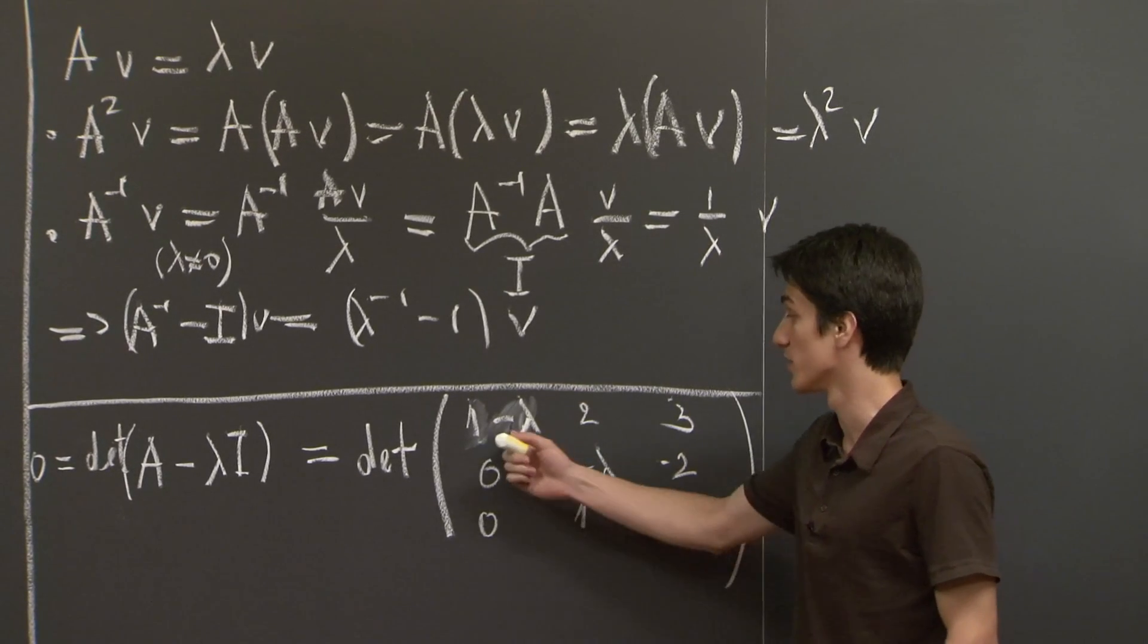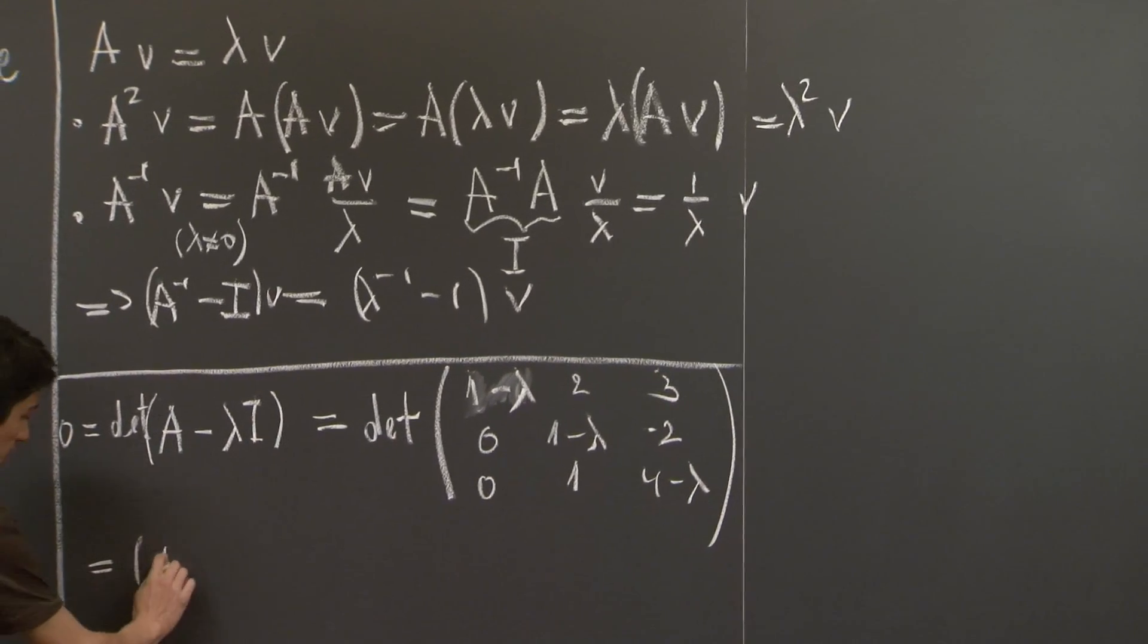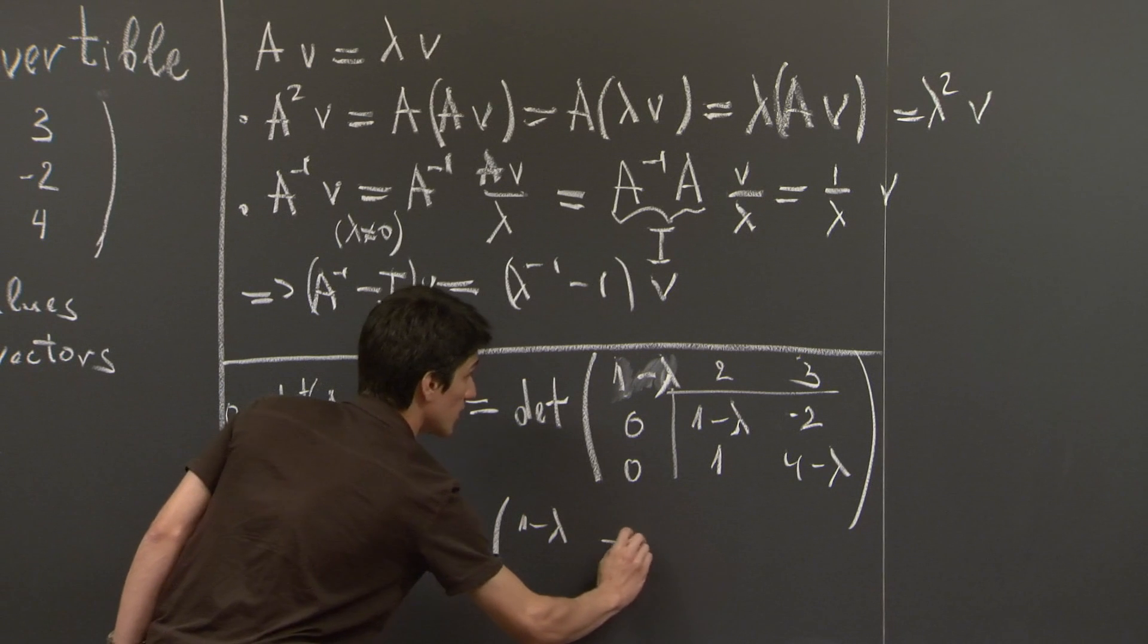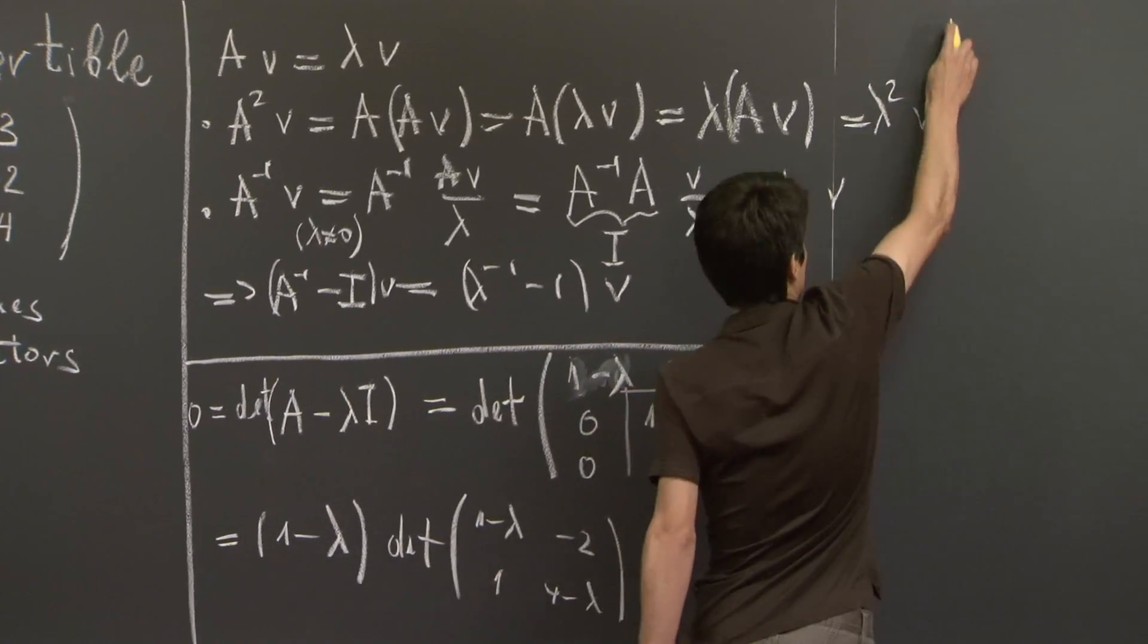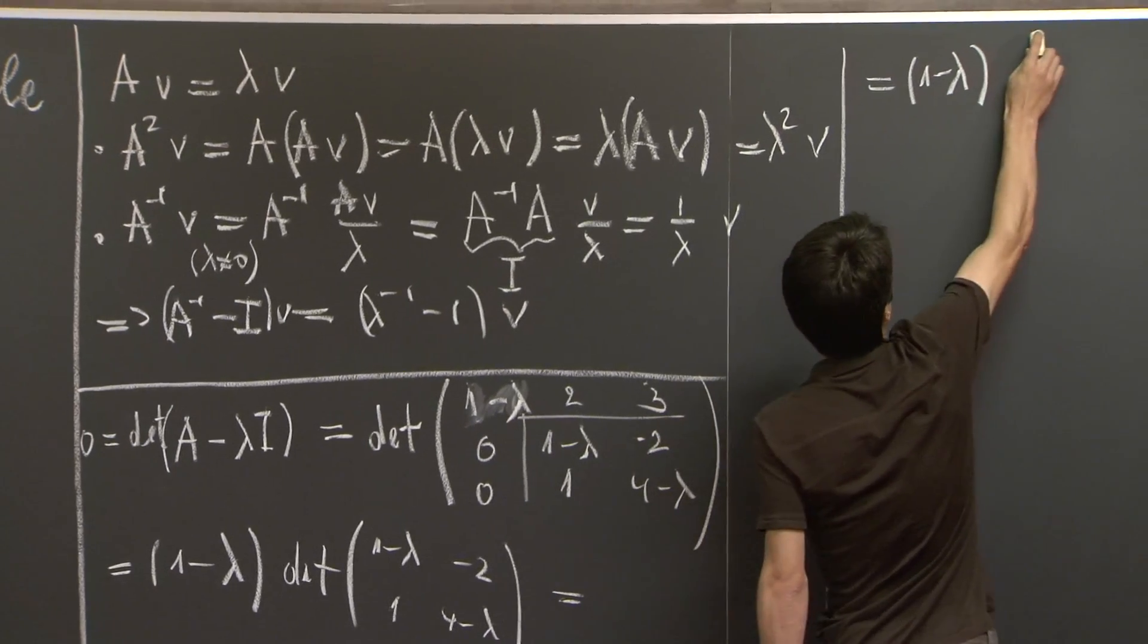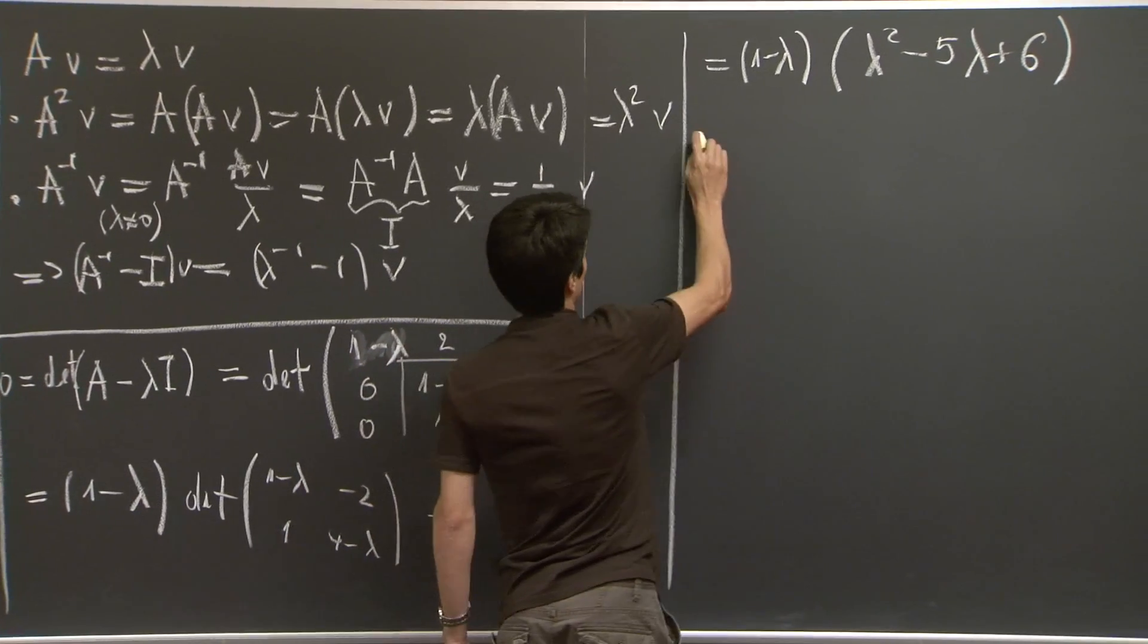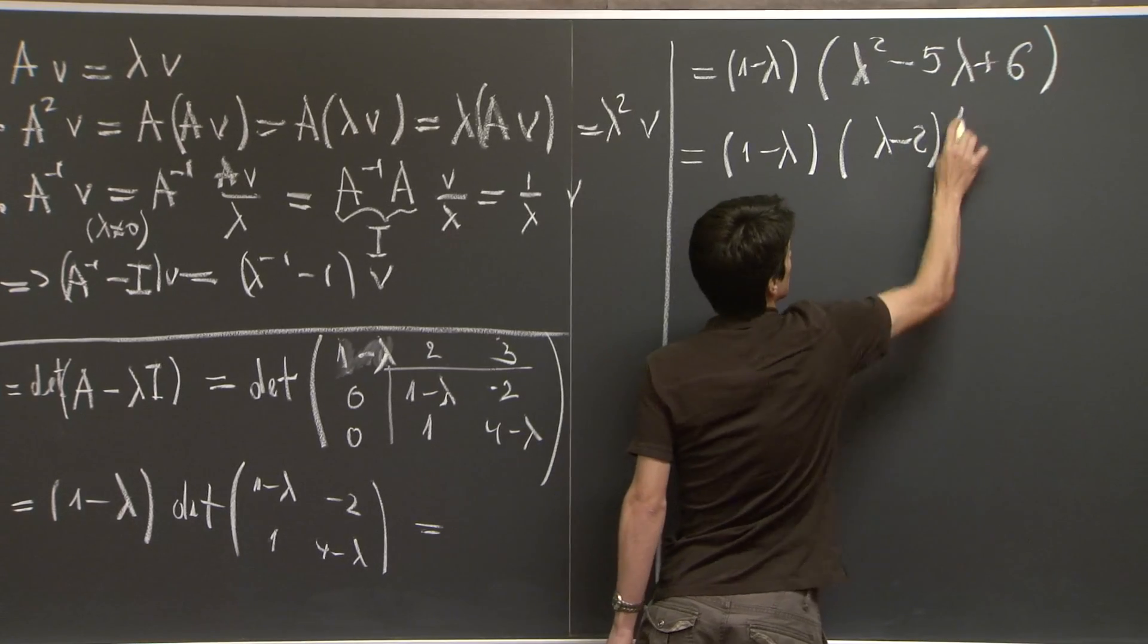So it's fairly obvious which column we should use to expand this determinant. We should use the first column, because we have only one non-zero entry. And so this is equal to 1 minus lambda times the determinant of the 2 by 2 matrix, 1 minus lambda, negative 2, 1, 4 minus lambda. Which is, I'm going to take the computation up here, 1 minus lambda, lambda squared minus 5 lambda plus 6, which is a fairly familiar quadratic, and we can write it as a product of linear factors, lambda minus 2, lambda minus 3.